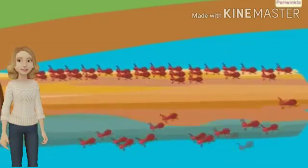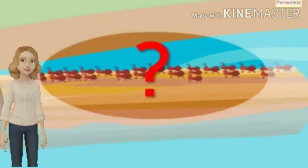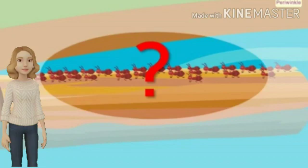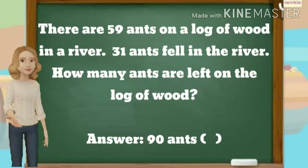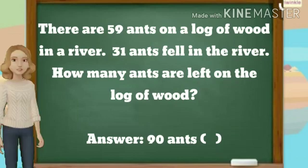Moving on to the next question: there are 59 ants on a log of wood in a river. And 31 ants fell in the river. How many ants are left on the log of wood is your question.